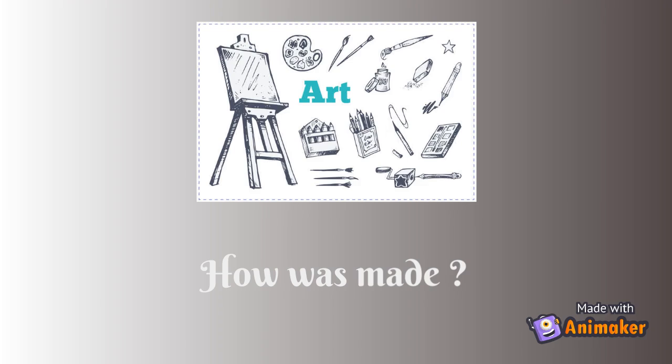Oil on canvas is the process of painting with pigments with a medium of drying oil as a binder. Commonly used drying oils include linseed oil, poppy seed oil, walnut oil, and safflower oil. The choice of oil imparts a range of properties to the paint, such as the amount of yellowing or drying time. The paint can also be thinned with turpentine.